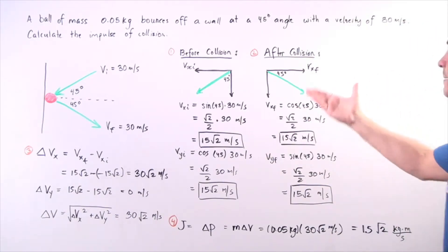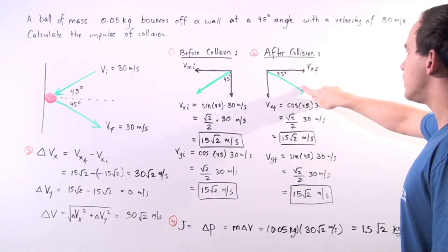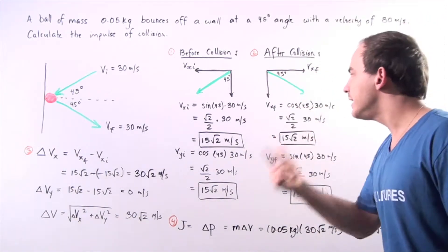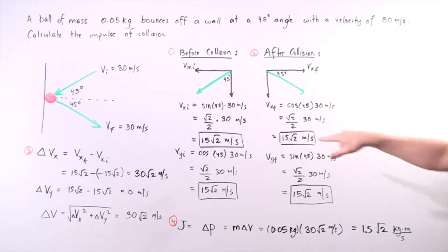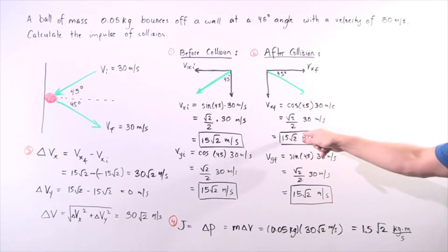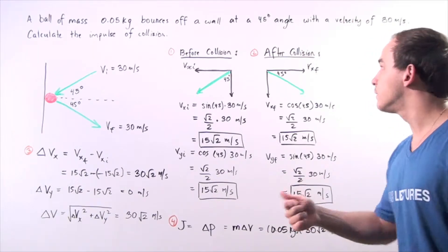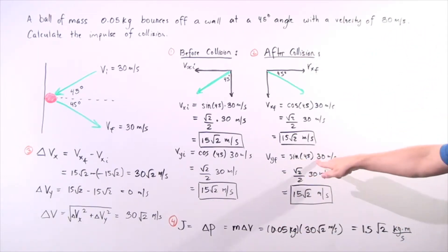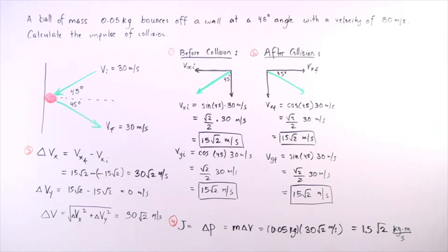After the collision, the same exact steps are taken with the following 45-45-90 degree triangle. The final x component vector is cosine 45 times 30, giving a magnitude of 15 radical 2 meters per second. And the y component vector after the collision is sine 45 times 30, so once again 15 radical 2 meters per second.